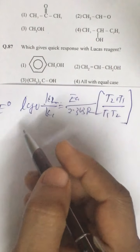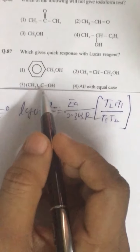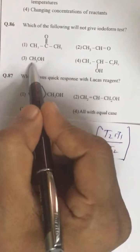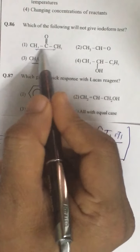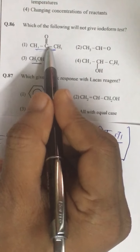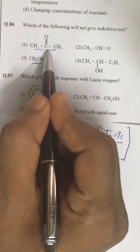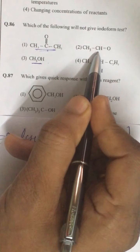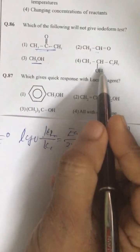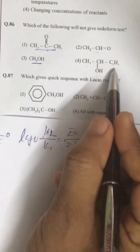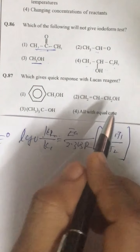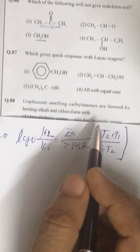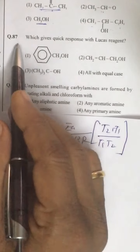Question number 86: which of the following will not give the haloform test? In alcohols, only ethanol gives this test — not methanol. In ketones, any alkan-2-one (propan-2-one, butan-2-one, pentan-2-one, etc.) gives the test. In aldehydes, only ethanal gives this test. In secondary alcohols, propan-2-ol, butan-2-ol, etc. all give this test.